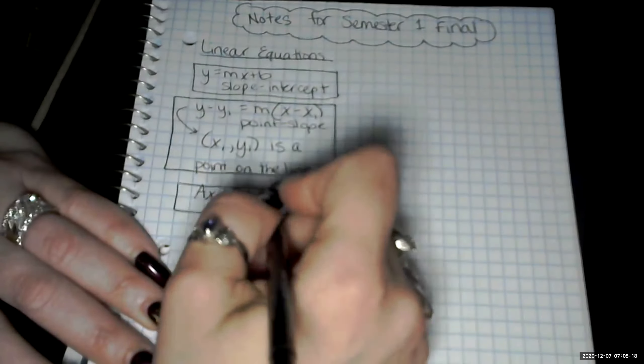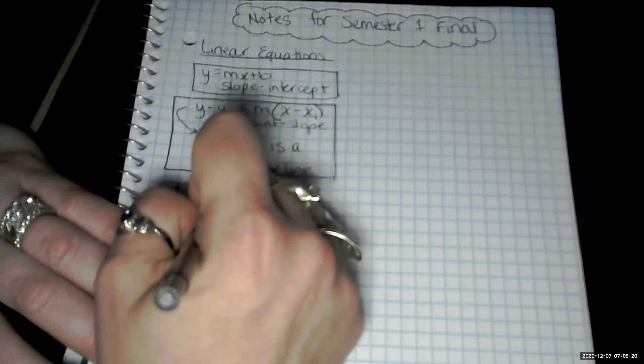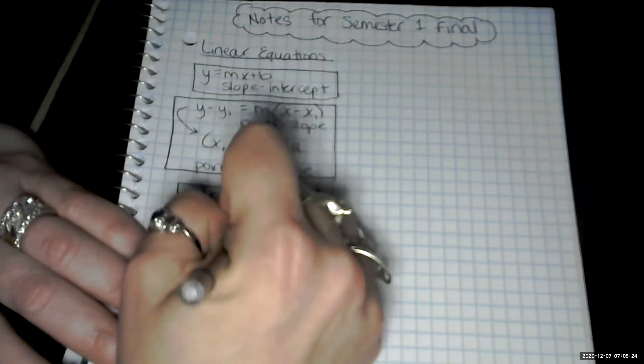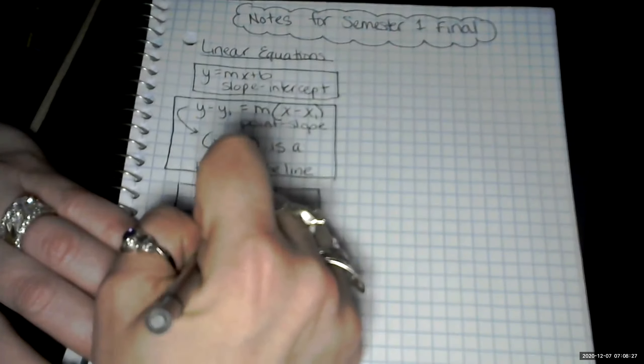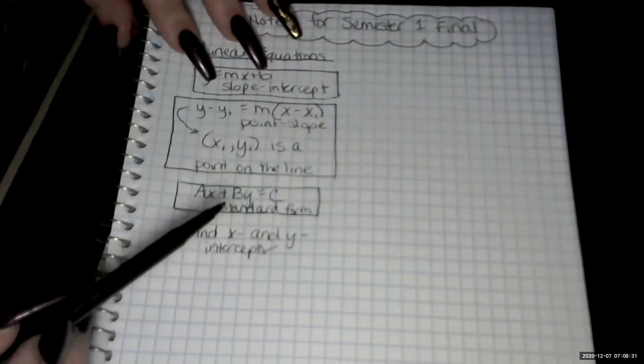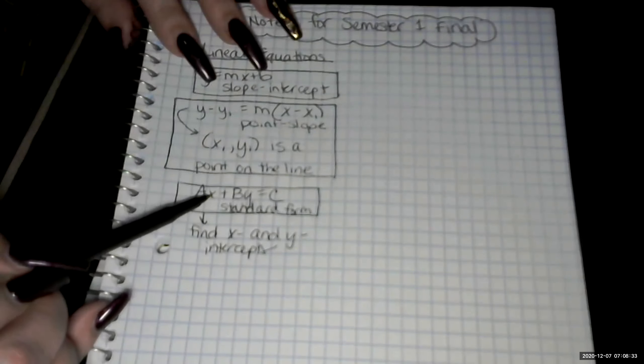But standard form, let's just add to this. This is where we use the x, so find x and y intercepts. And remember, to do that, you would plug in a zero here, solve for y.